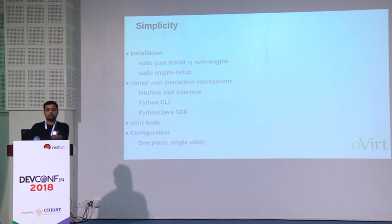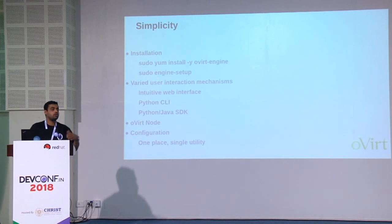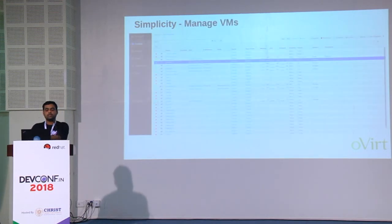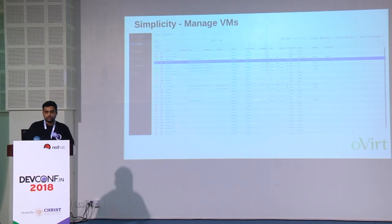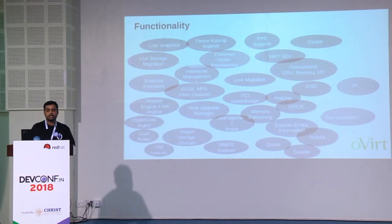To install, just run 'yum install ovirt-engine', then run 'engine-setup' — you only need to provide a few inputs like database credentials and you're done. You get a UI, CLI, and RESTful service. If you want to integrate with other projects you can do so easily. Simplicity means the user experience is very straightforward. And stability is assured since Red Hat has a downstream product — Red Hat Enterprise Virtualization — based on oVirt.